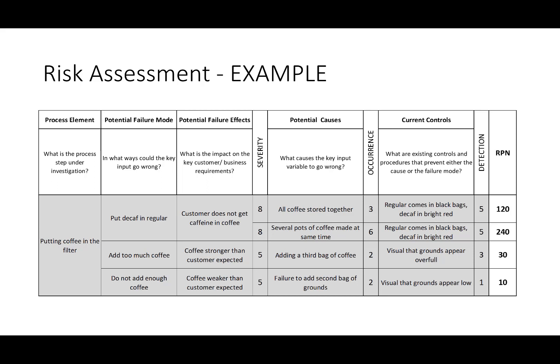Going further, for adding too much coffee, the customer thinks it's stronger or weaker than expected. This is certainly less severe than the customer not getting caffeine at all. The likelihood of occurrence is significantly lower, and the likelihood of detecting it, even if it does happen, is also much lower — so the risk of detection is much lower as well. For these cases, the bottom two failure modes have much lower RPNs of 30 and 10.